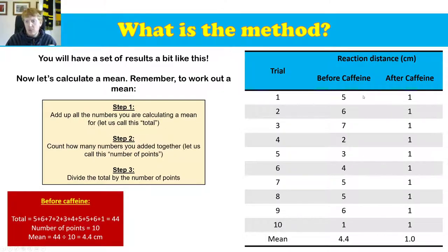So in this case, we've added up five, six, seven, two, three, five, six, seven, two, three, four, five, five, etc. We'll get to 44. The number of points, well, there were 10 drops, so there's 10 points. So 44 divided by 10 means our mean catch distance before caffeine was 4.4 centimeters. And that's exactly what we put in the table just here.